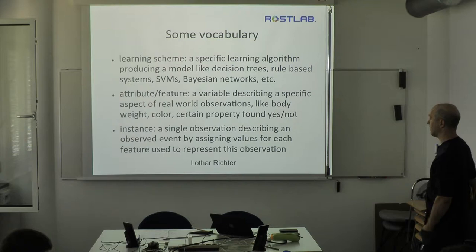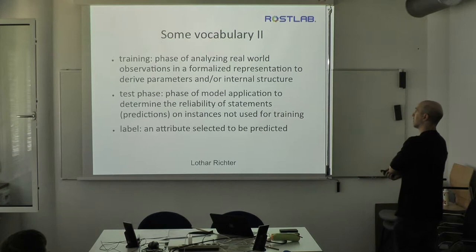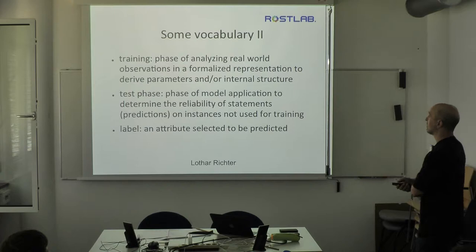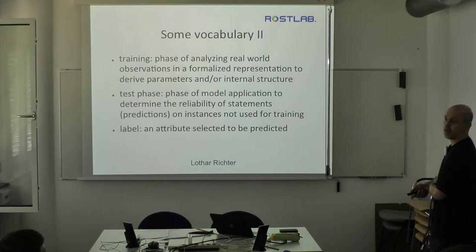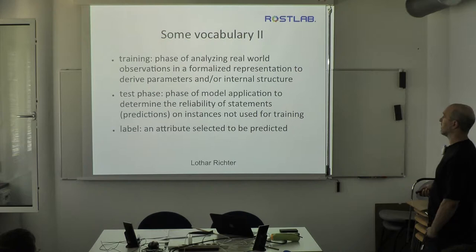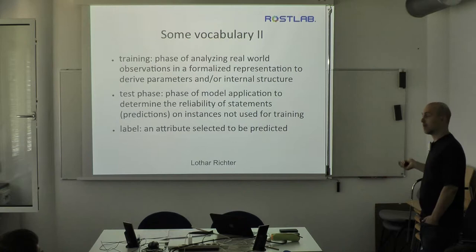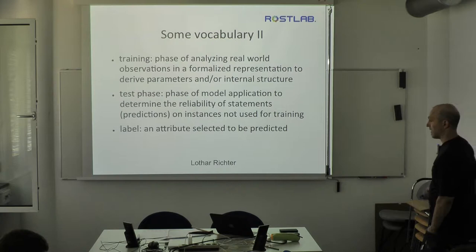A single instance is an observed event described by assigning values for each feature. There are also different phases in machine learning. The training phase is used to analyze observations from the real world and derive parameters and the internal structure of the model. With some learning schemes you can also derive the internal structure — like in Bayesian networks, you can learn the structure, not only parameters. The test phase is where you apply the model to new instances to determine the reliability of the predictions, and you should do this on instances not used for training.